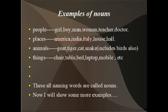Places include America, India, Italy, your house, my hall, and even your bedroom — all are referred to as places. Animals include goat, tiger, cat, snake, and this category also includes birds and insects.